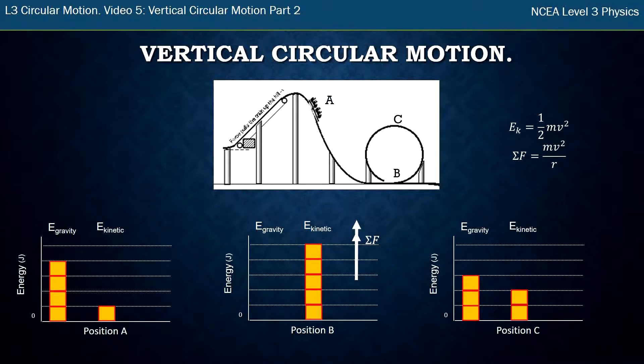At point C, its kinetic energy is much less, and because its kinetic energy is less, its velocity is less because of the formula. Therefore its total force, or its circular force, or centripetal force as we also call it, is going to be smaller.